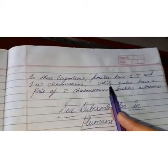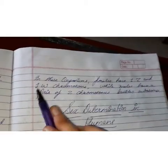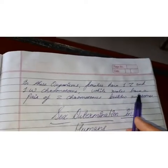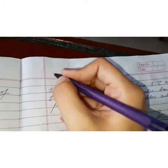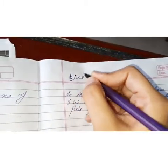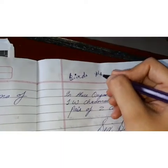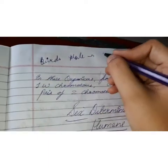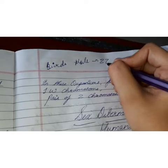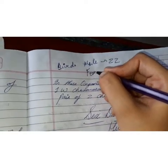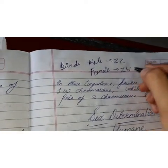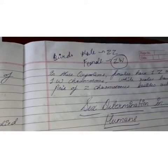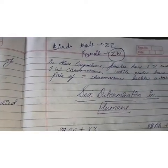In organisms showing female heterogamety, females have one Z and one W chromosome, while males have a pair of Z chromosomes besides autosomes. So in case of birds, males will have two Z chromosomes, and females will have one Z and one W chromosome. Female heterogamety is shown in the case of birds.